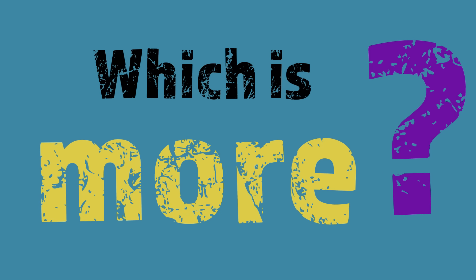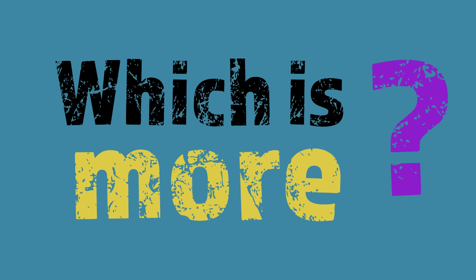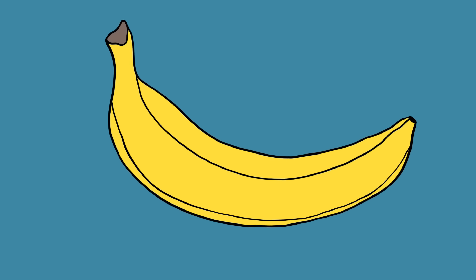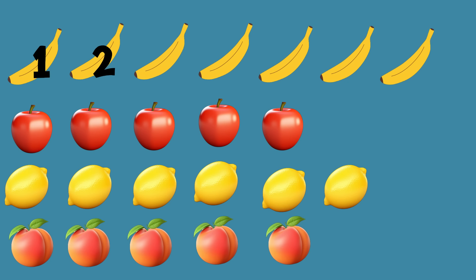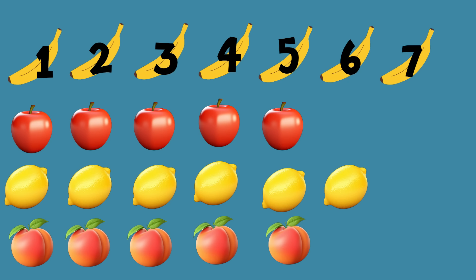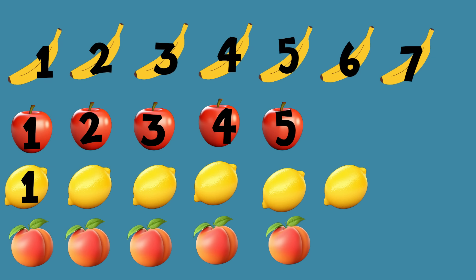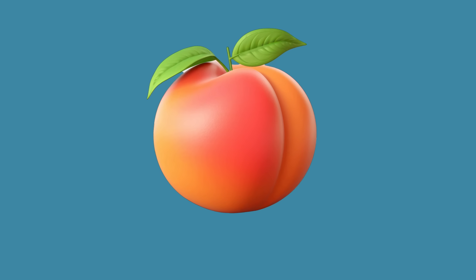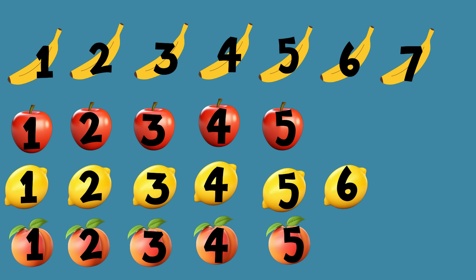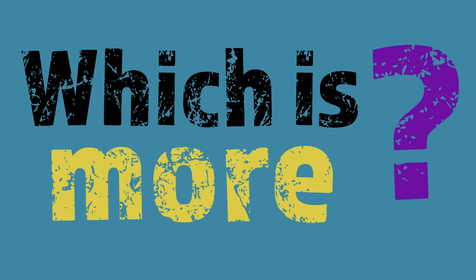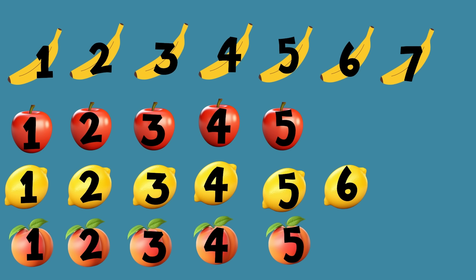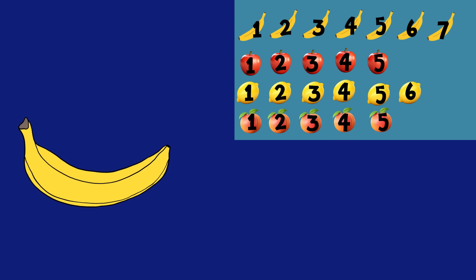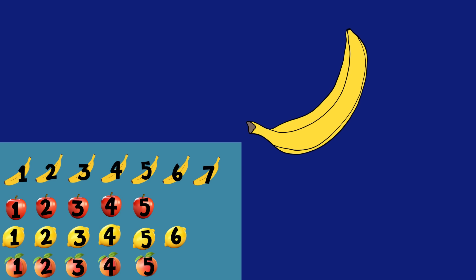Which is more? Let's count the bananas: one, two, three, four, five, six, seven. Let's count the apples: one, two, three, four, five. Let's count the lemons: one, two, three, four, five, six. Let's count the peaches: one, two, three, four, five. Which is more? You guessed it — there are more bananas. There are seven bananas in all.